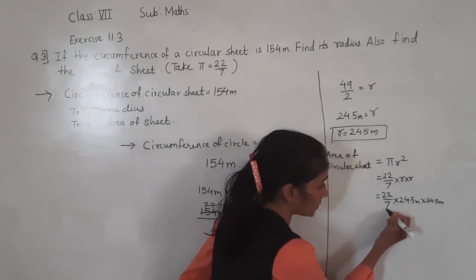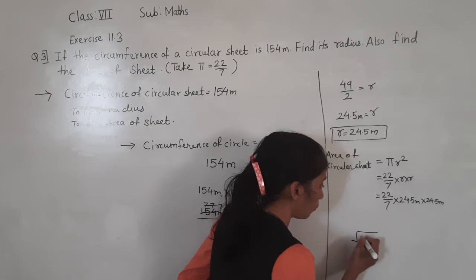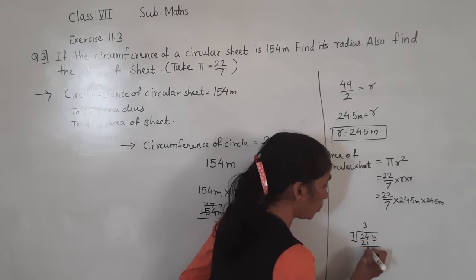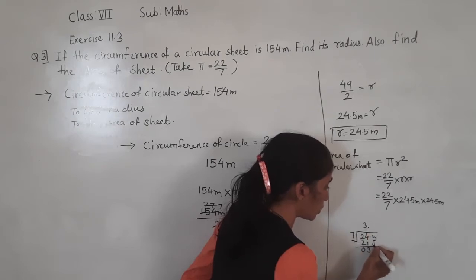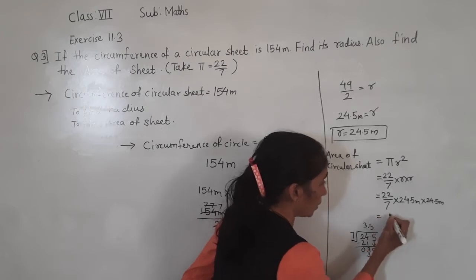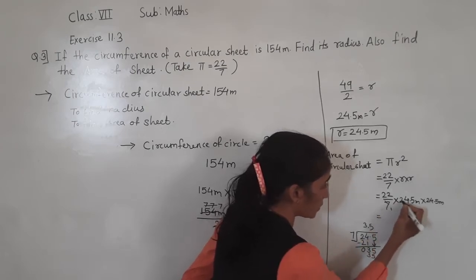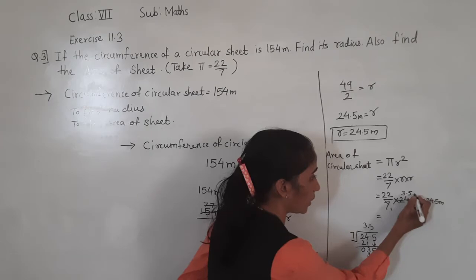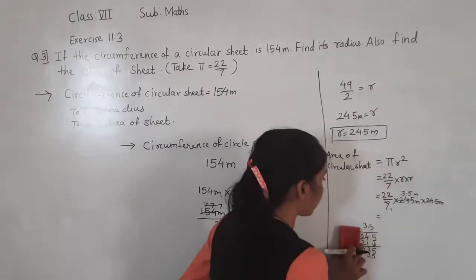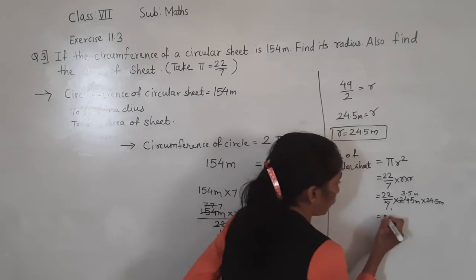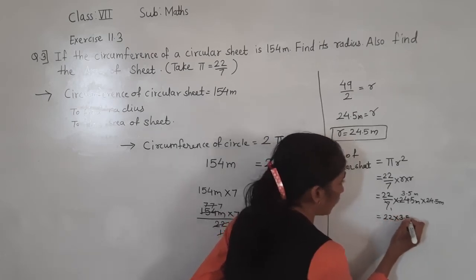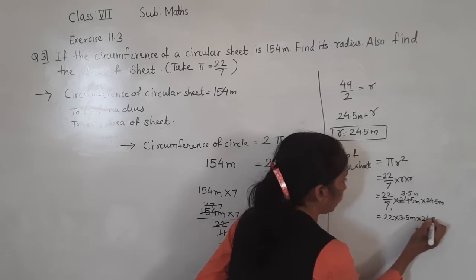Now let's divide 24.5 by 7 first. 7 × 3 = 21, remainder 3; bringing down 5 after decimal: 7 × 5 = 35. So 24.5 ÷ 7 = 3.5 metres. Now we have 22 × 3.5 × 24.5.